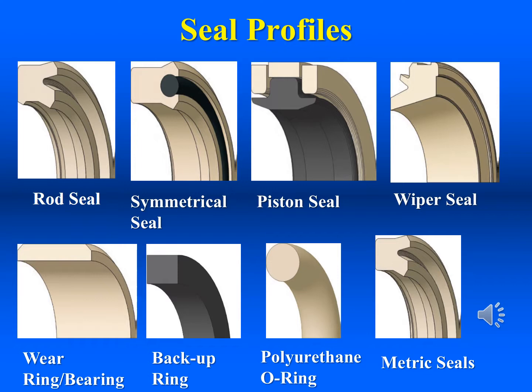Next are the polyurethane O-rings, D-rings, and head seals. Static polyurethane head seals are ideal for replacing O-rings and backups in hydraulic cylinder heads, foolproofing installation, and eliminating failures due to backup pinching and blowout. Next are the metric seals. Preferred profile rod, wiper, and piston seal designs are offered in metric standard sizes from many manufacturers.